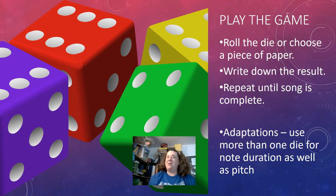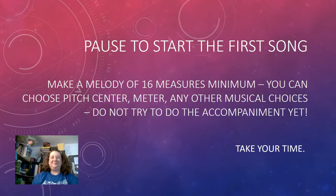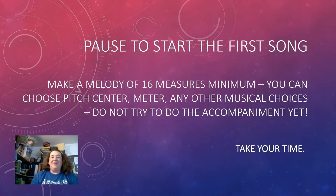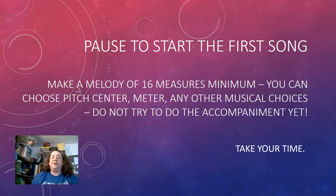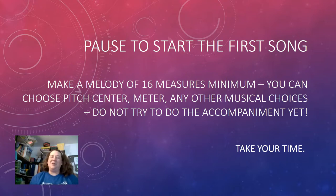Now it's your turn. Pause right here to start composing your first song. Make a melody of 16 measures minimum — you can choose your pitch set, meter, and any other musical choices — but don't try to do the accompaniment yet because that'll be the next step.